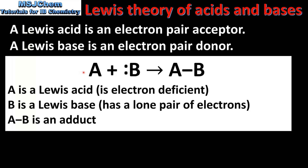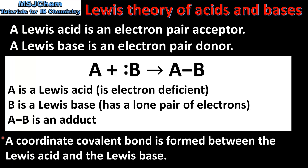In this reaction we have the Lewis acid which is A reacting with a Lewis base which is B to form the adduct AB. Lewis acids are electron deficient and Lewis bases are electron rich. In the reaction a coordinate covalent bond is formed between the Lewis acid and the Lewis base, resulting in the formation of the adduct.